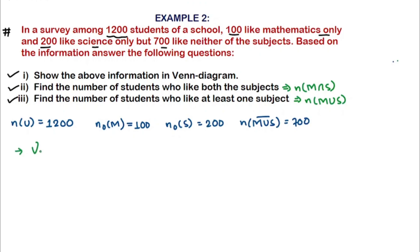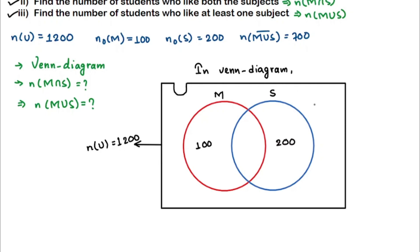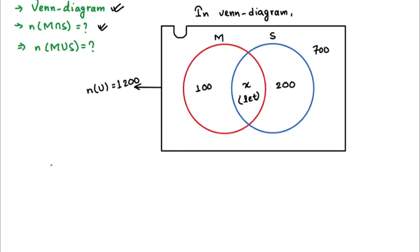Now let's fill up this data in our Venn diagram. We have maths and science as our two circles, with total U = 1200. Only maths is 100, so we place 100 on the maths-only region, and only science is 200, so we place 200 in the science-only region. Those who don't like any subject — 700 — is placed outside both circles. We don't know how many like both subjects, so we write X in the intersection.